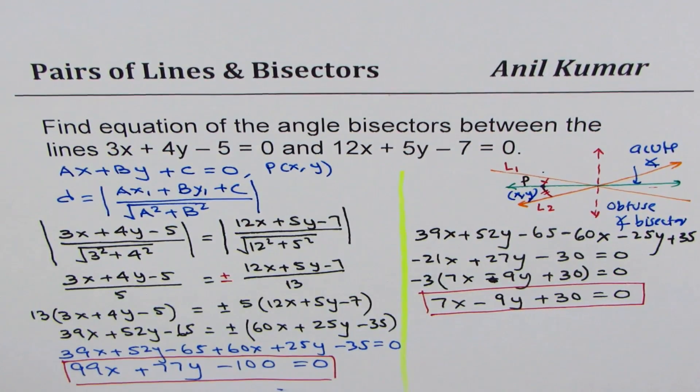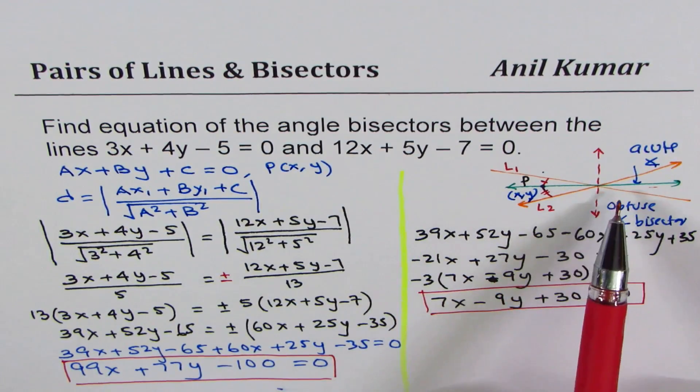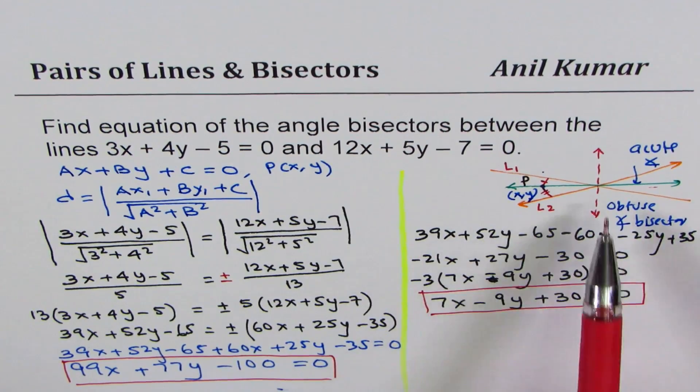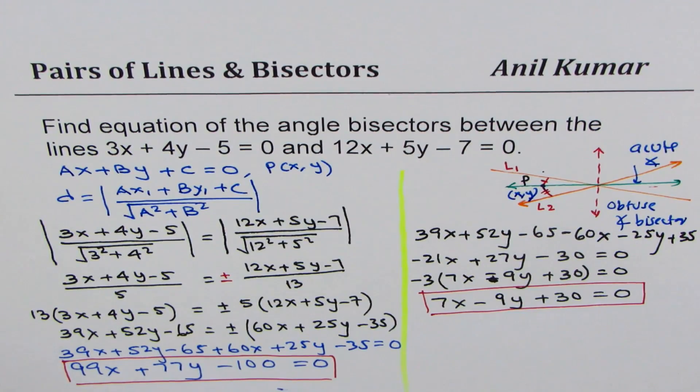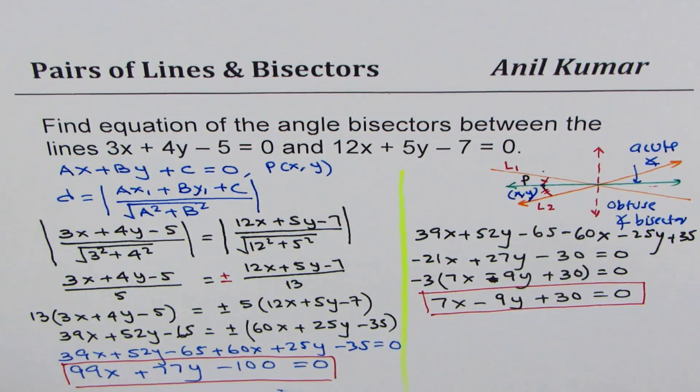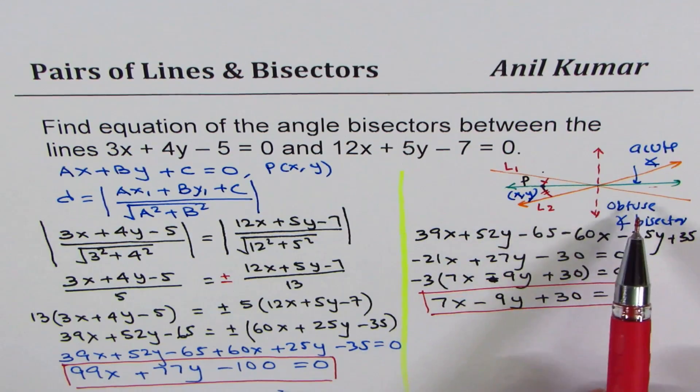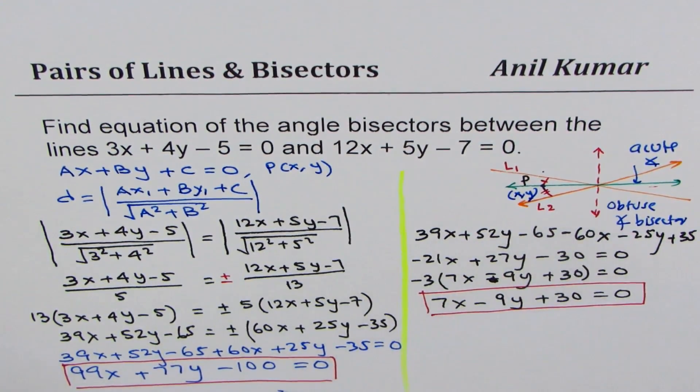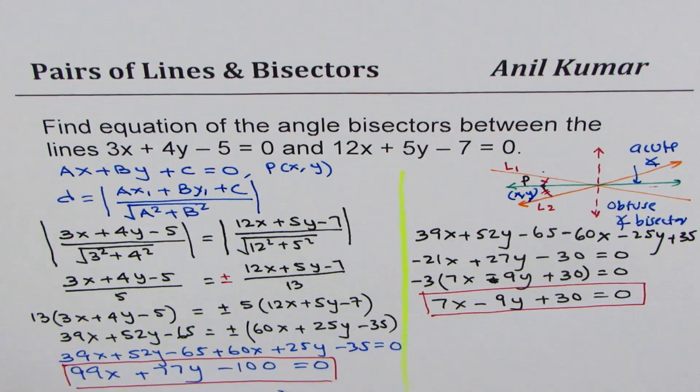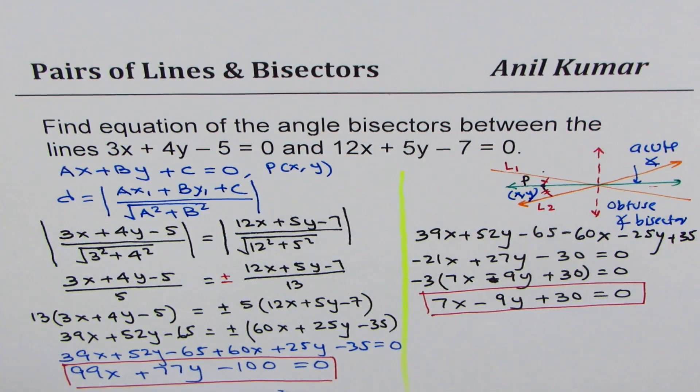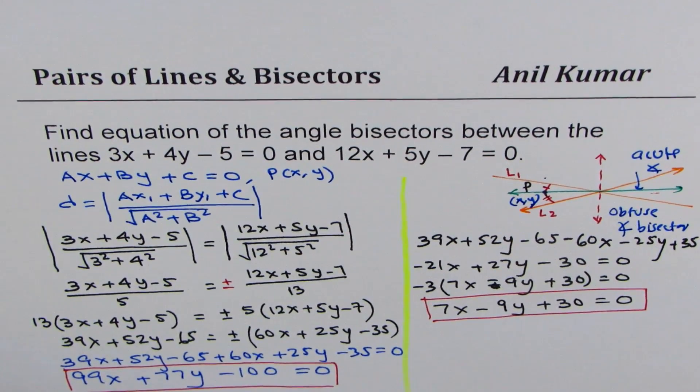These are the two equations giving us the angle bisectors for the intersecting lines. You can determine which is the obtuse angle bisector and which is the acute angle bisector. There is a formula for this, which I'll provide a link to. Think about how we decide which one is acute and which is obtuse - that's a question for you to answer. I hope this helps you understand the topic. Feel free to post comments and share. Thank you and all the best!